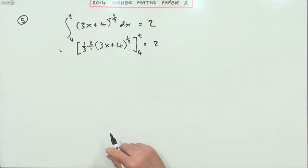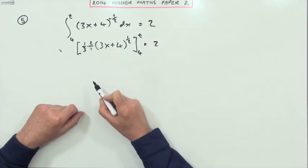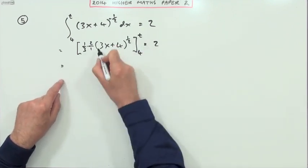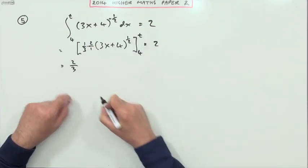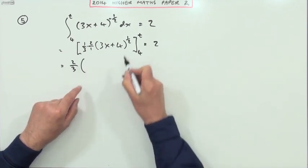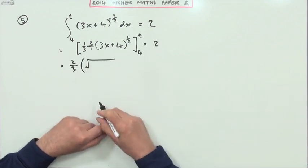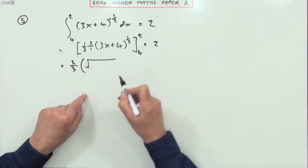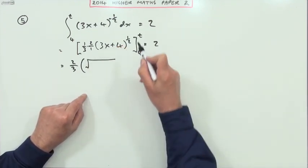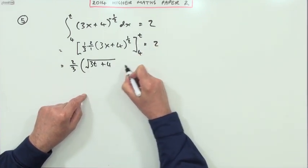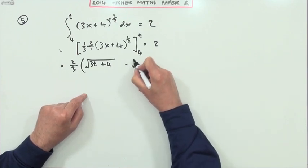So you could take it out. It's two-thirds of the first one, and I'll rewrite that. Power of a half means it's a square root, so when doing the substitutions it's the square root of - first work it out at t, that'll be 3t plus 4, then work it out at 4, so it'll be the square root of 3 times 4 plus 4, equals 2.